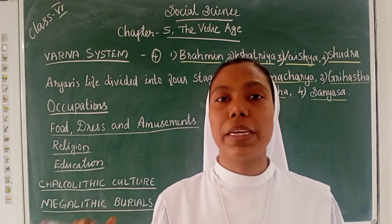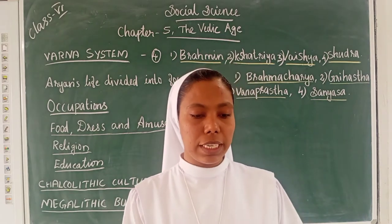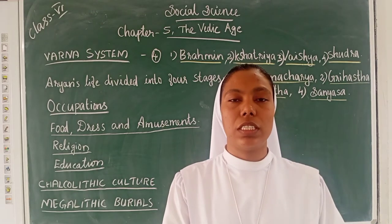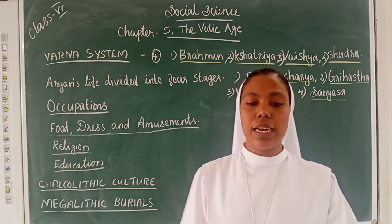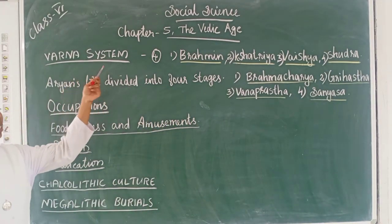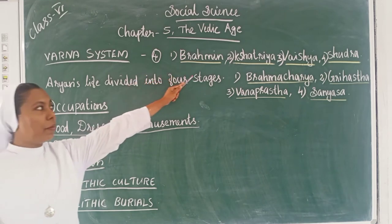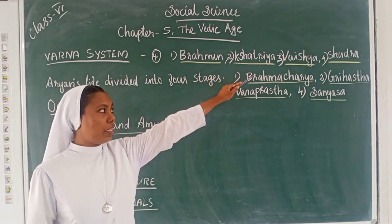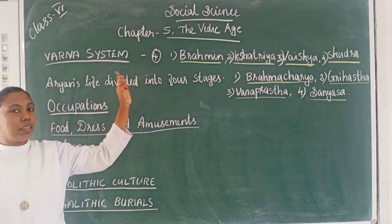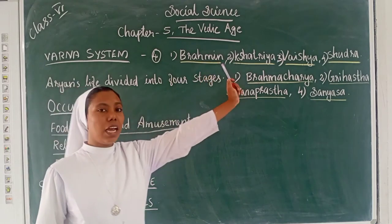The Aryan society was divided into four sections based on the Varna system. These four sections are: Brahmins, Kshatriyas, Vaishyas, and Shudras.